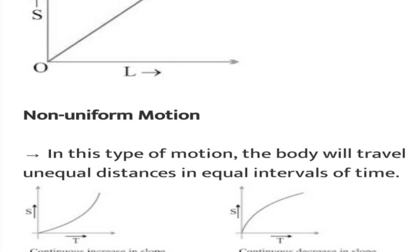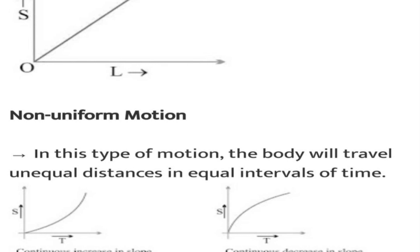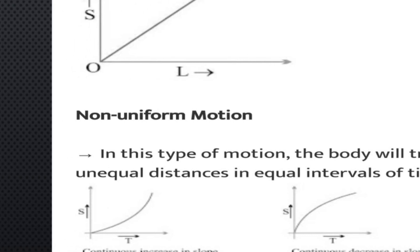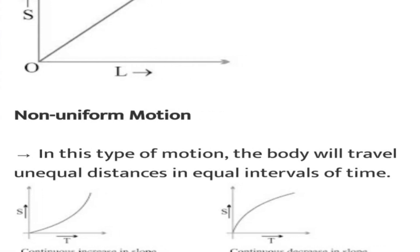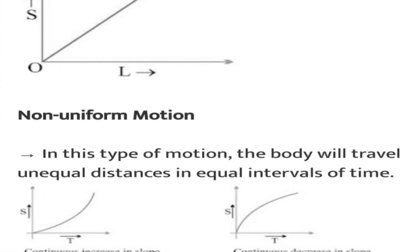On the speed-time graph, uniform motion gives a straight line. Non-uniform motion also appears as a straight line in some representations, but a curve indicates accelerated non-uniform motion. So: uniform motion graph is a straight line; non-uniform motion graph is curved.